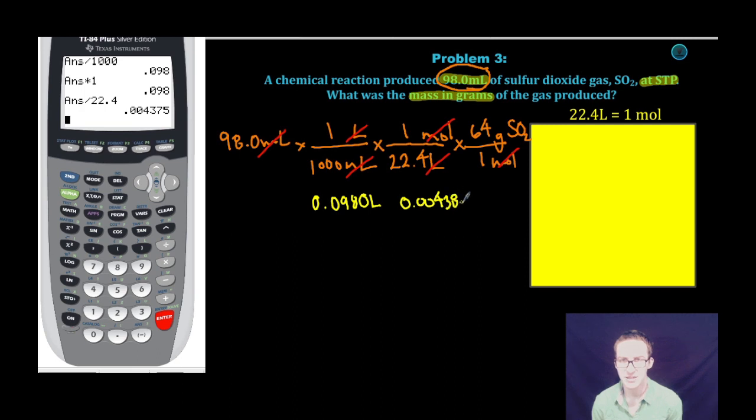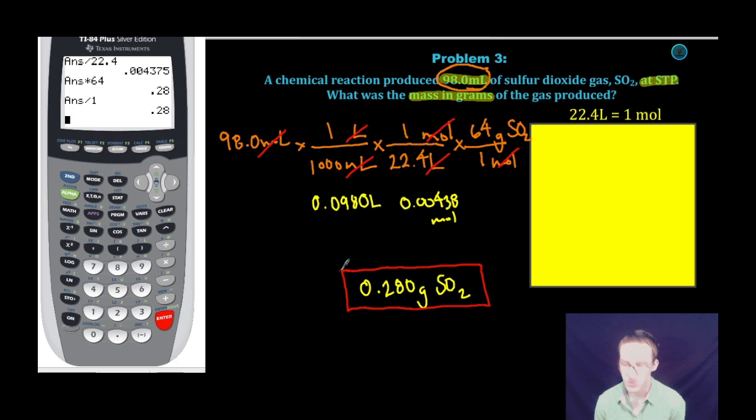0.00438 moles, which we expect because we have a lot less than 22.4 liters. Our final step: we're only going to make 0.280 grams of SO2. A quick box around my answer and we're done.